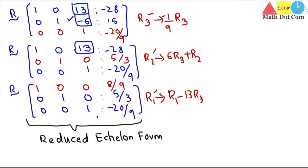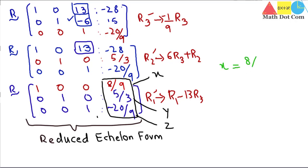This is the reduced echelon form. The values we obtain are: x = 8/9, y = 5/3, and z = -20/9. You can verify these values by substituting back into the original equations to check that the left-hand side equals the right-hand side. This method helps you find x, y, and z more quickly. Just keep in mind which row you're operating on and that only addition, subtraction, or division by a constant are valid row operations. That's all from today's lecture, thank you.